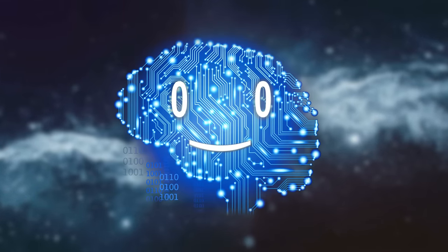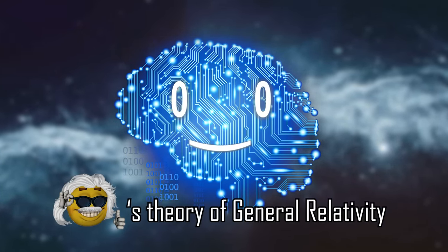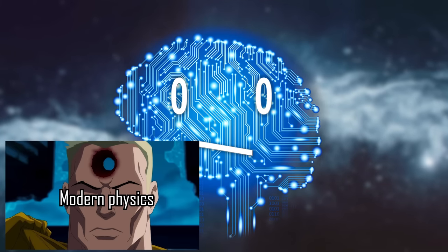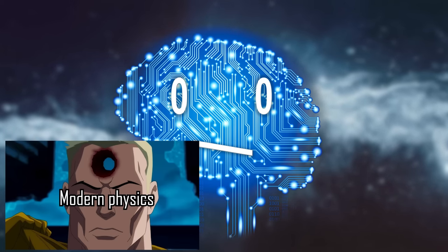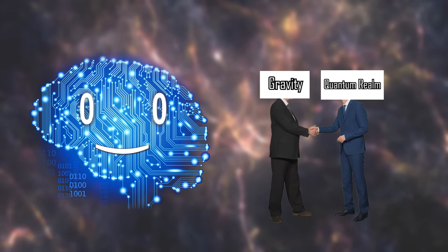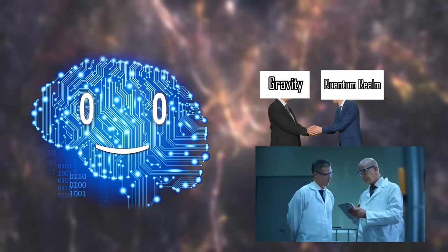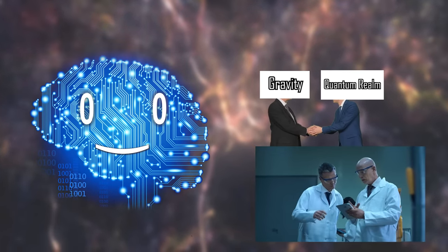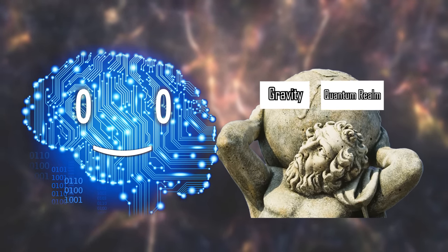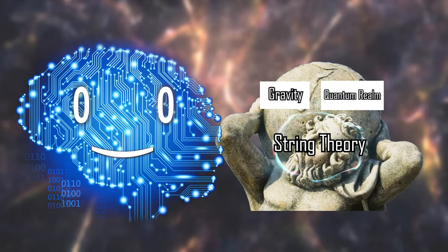Instead, gravity is solely described by Einstein's theory of general relativity. This right here is the big glaring hole in modern physics. The grand unification of gravity and the quantum realm has been the focus of physicists for the past half a century. And one of the largest contenders for this so-called grand unifying theory is the one and only string theory.